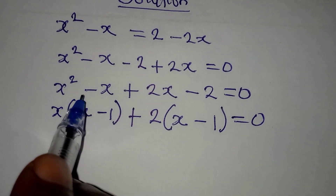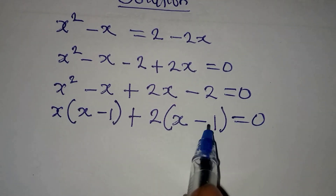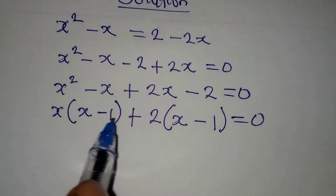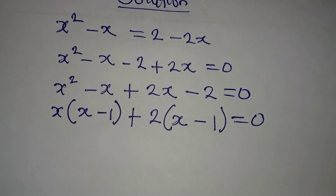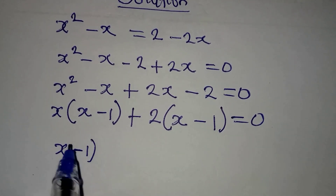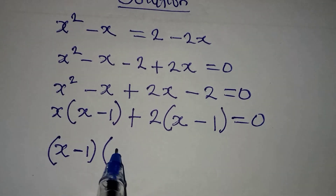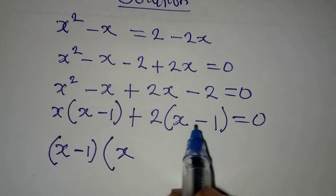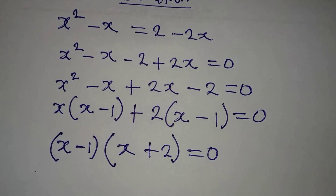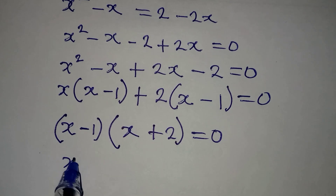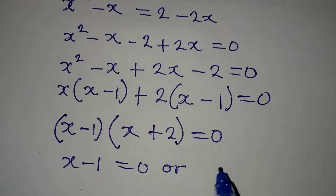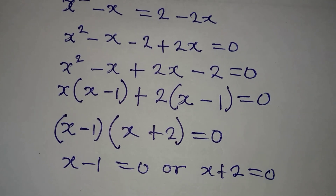Remember that every time you factorize like this and you have the same terms in the bracket, then you are correct. Now bring the two terms together and factor out x minus 1. If I factor out x minus 1, what will be left over here is x, and what will be left here is 2, that will be plus 2. So we have (x minus 1)(x plus 2) equals 0.